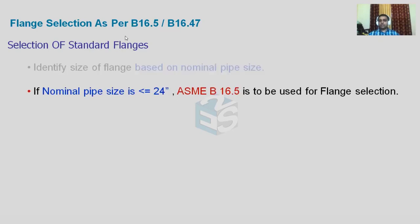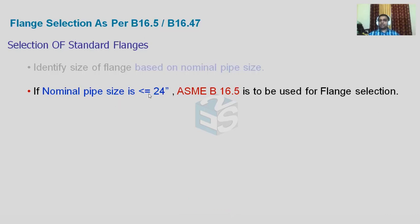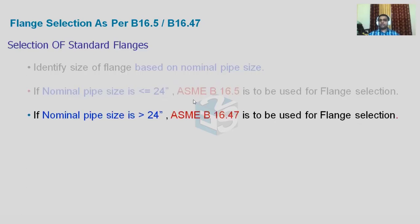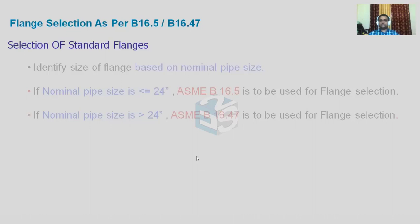There are two standards available for the selection of a flange: B16.5 and B16.47. B16.5 is applicable to flanges having a size less than or equal to 24 inches NPS. If your flange size is less than or equal to 24 inches, select it using ASME B16.5. If the flange size is more than 24 inches, B16.5 does not cover those sizes, so we have to go with B16.47.